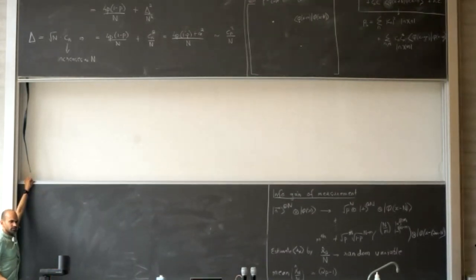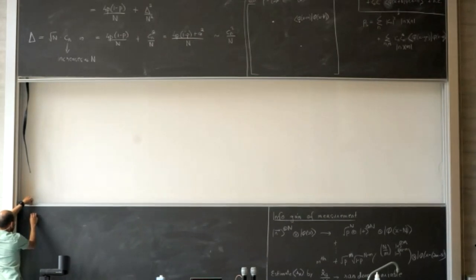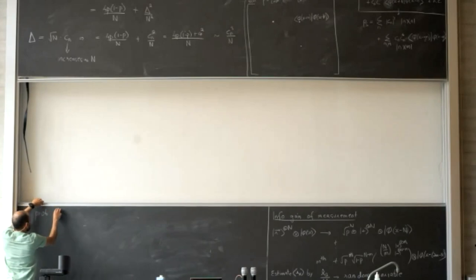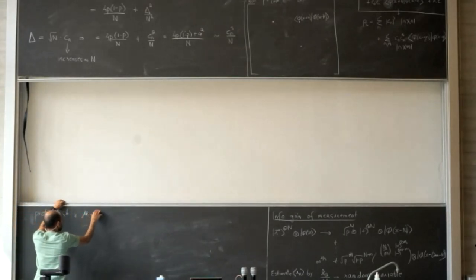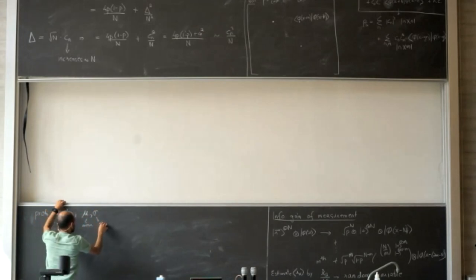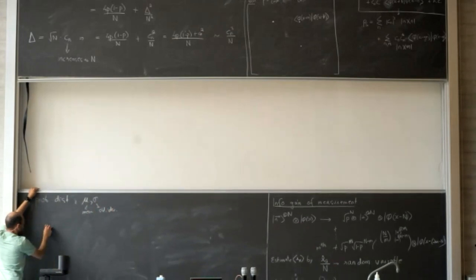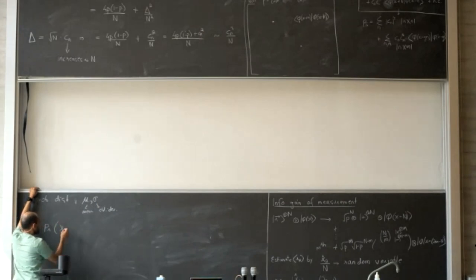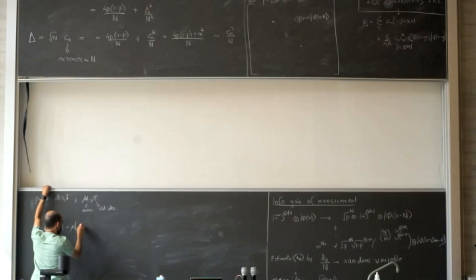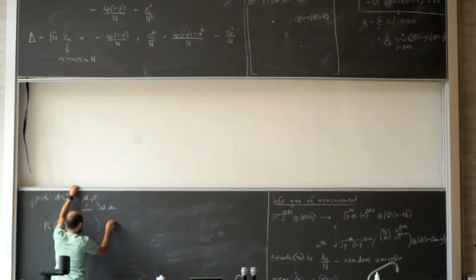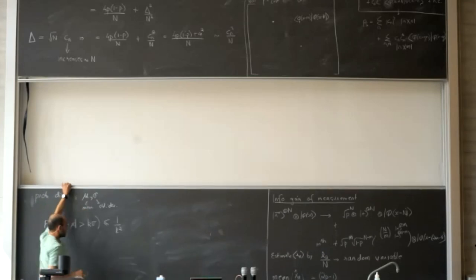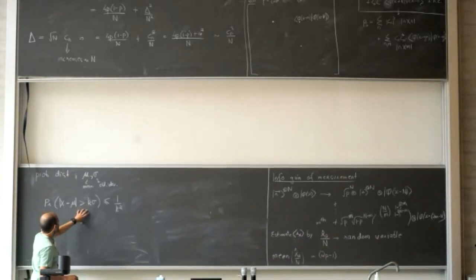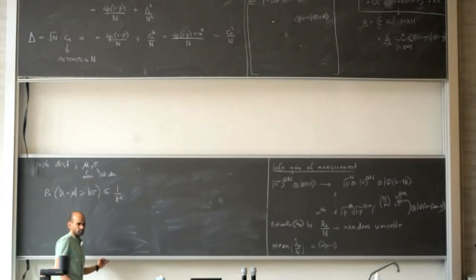Now I use Chebyshev's inequality: for a probability distribution with mean μ and standard deviation σ, the probability that a measurement gives a result more than k·σ away from the mean is ≤ 1/k². This gives a bound on the probability of being far from the mean, valid for any probability distribution.